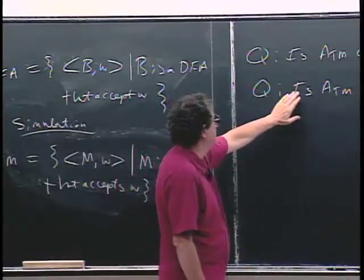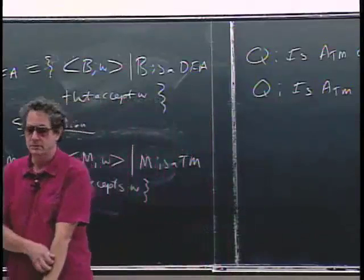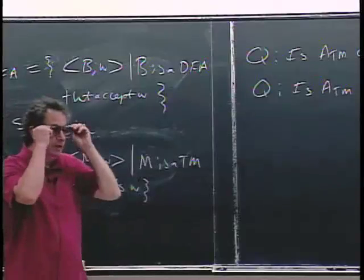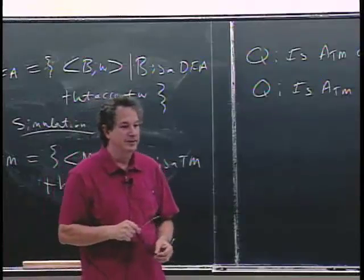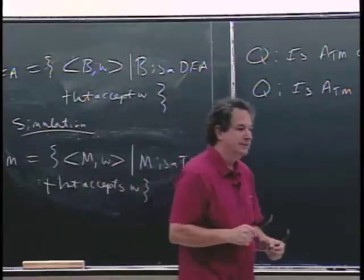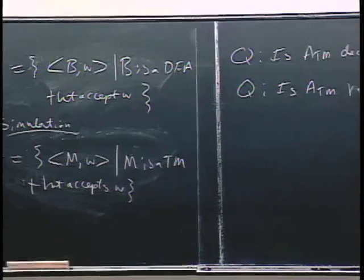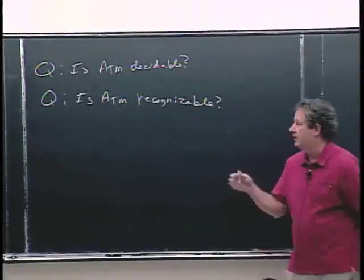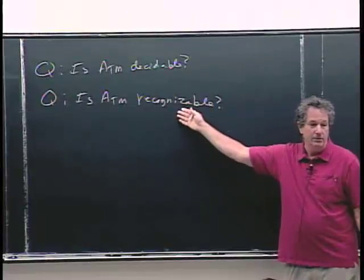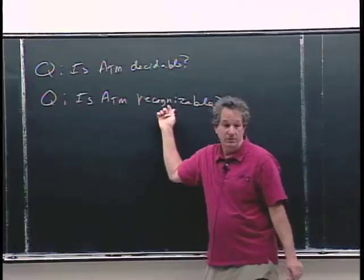Let's look at whether this language is recognizable first. The answer is yes. The basic idea is that we can build a Turing machine which can take in a description of another Turing machine and an input W, and then start simulating what that Turing machine M does on W.